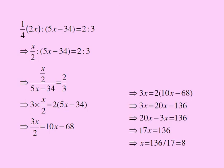The next line moves from here to here. I cross multiply. 3x times 1 is 3x. 2 times 10x minus 68. I get 3x here. 20x minus 136. 2 times 68 is 136.